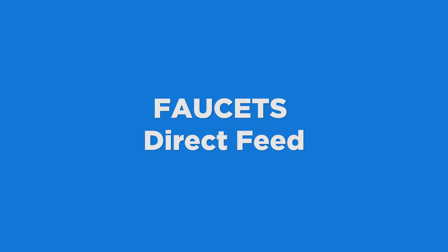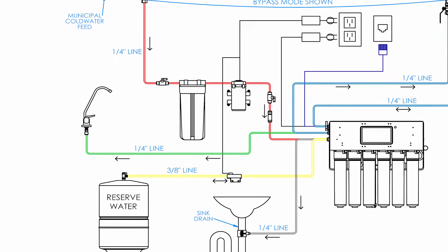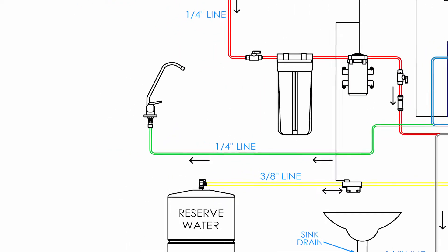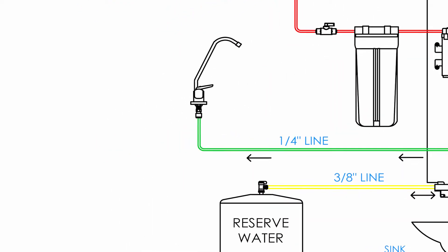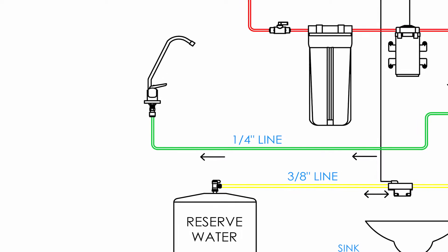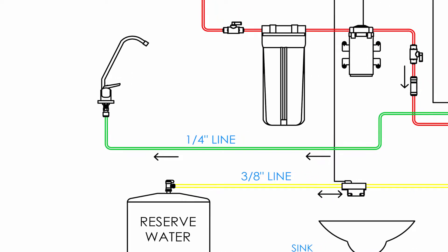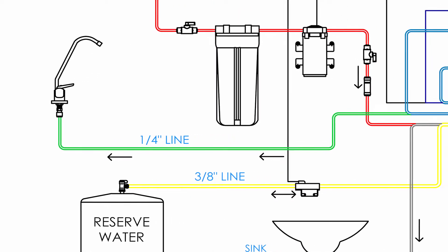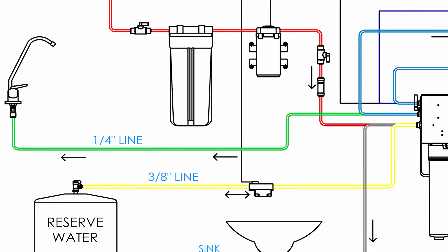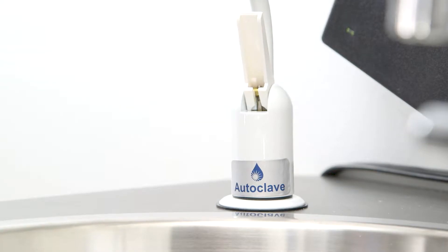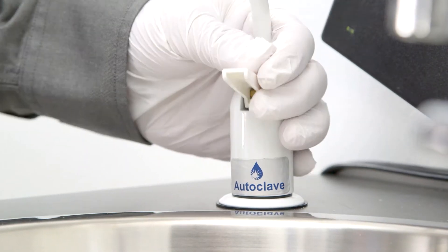Faucets. Direct feed. The direct feed configuration comes with only a white autoclave faucet. Dental water is plumbed directly to the handpiece from the system. The faucet can be mounted on a countertop or on a wall using an optional remote mounting bracket. For the purposes of this demonstration, we'll go over countertop mounting.